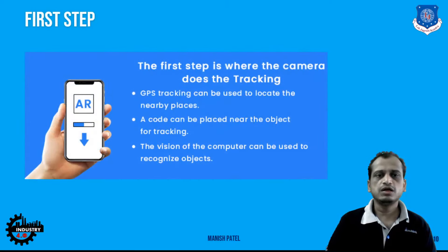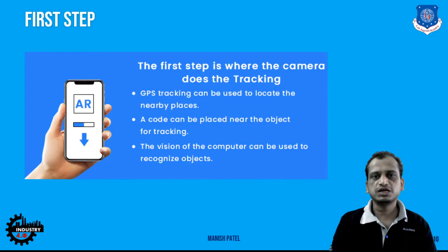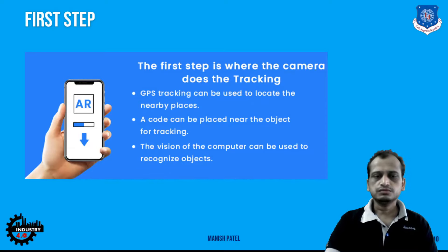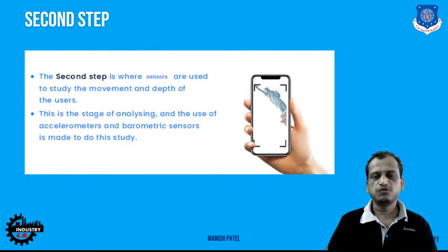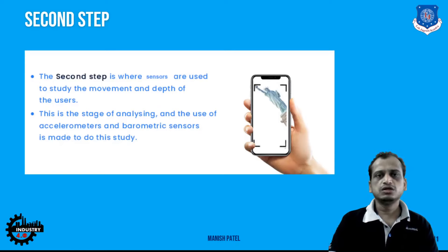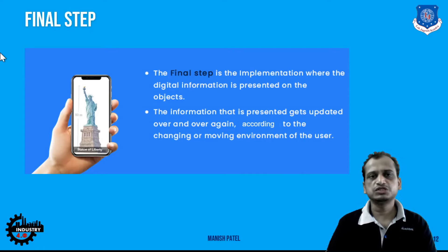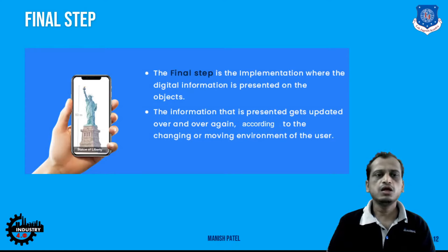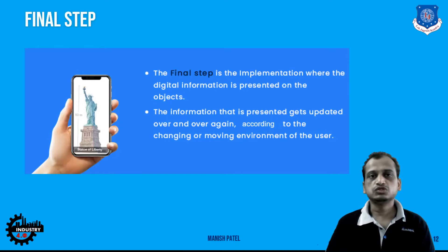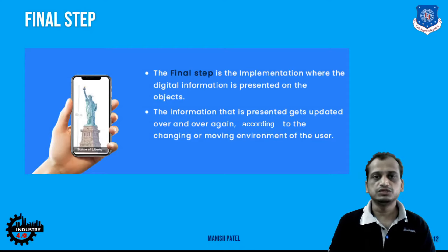In the first step, cameras — along with GPS-based tracking and marker-based tracking — acquire information about objects in the real world. Then sensors, such as barometric and accelerometer sensors, sense the movement and depth of the object. Once tracked and sensed, the system can interact, and real-time movement is implemented into the AR technology, placing digital information on top of the real world continuously in real time.